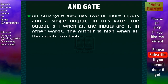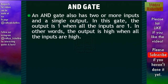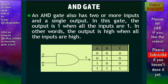The AND gate has two or more inputs and a single output. In this gate, the output is 1 when all the inputs are 1. In other words, the output is high when all the inputs are high. This figure shows the symbol and the truth table of the AND gate.